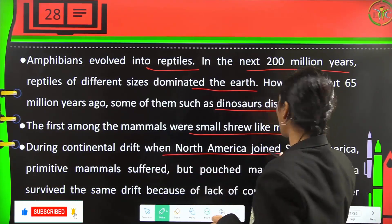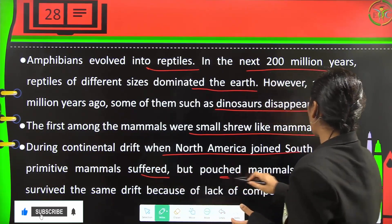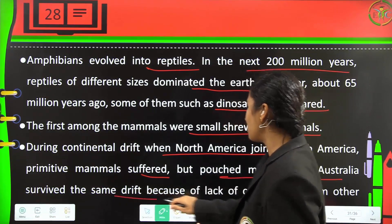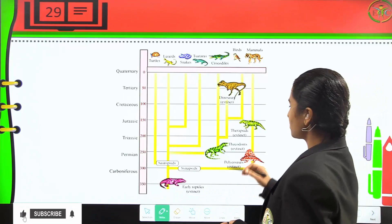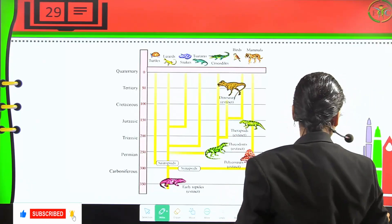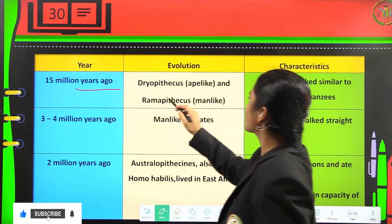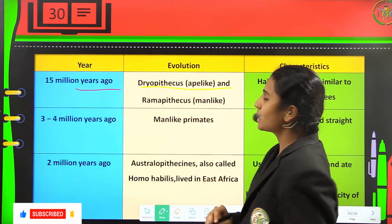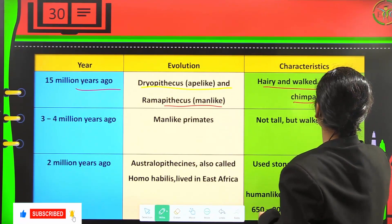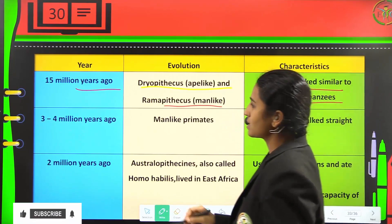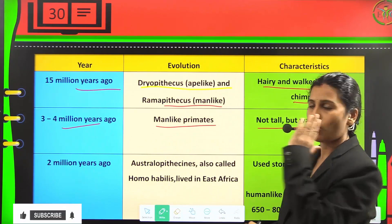During continental drift, when North America joined South America, primitive mammals suffered, but pouched mammals of Australia survived due to lack of competition. About 15 million years ago, Dryopithecus (ape-like) and Ramapithecus (more man-like) appeared; they were hairy and walked similarly to chimpanzees. Three to four million years ago, man-like primates appeared — they were not tall but walked upright.